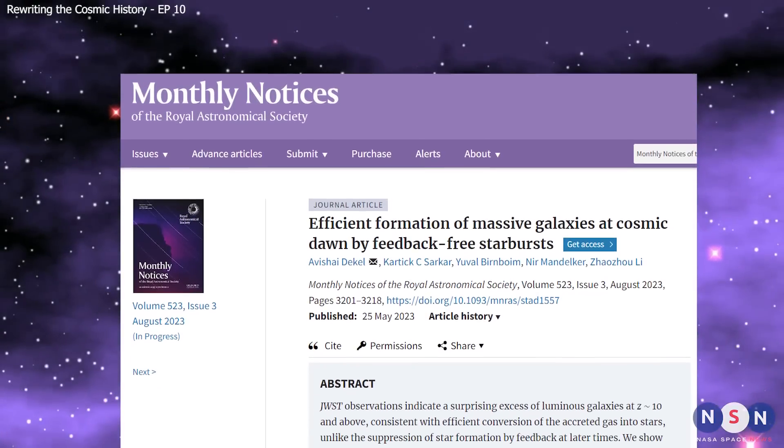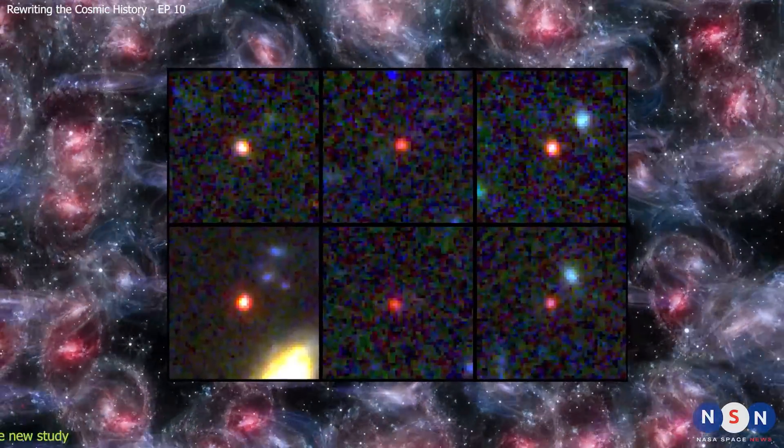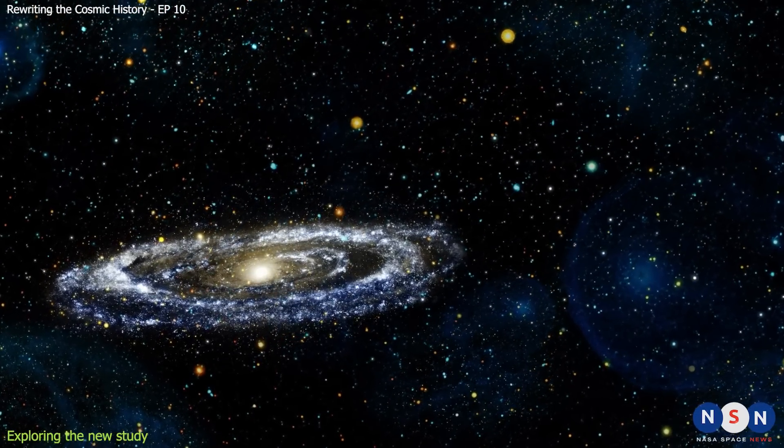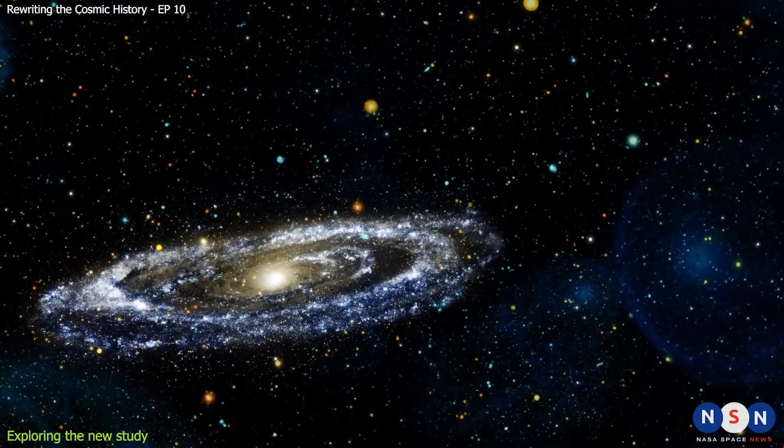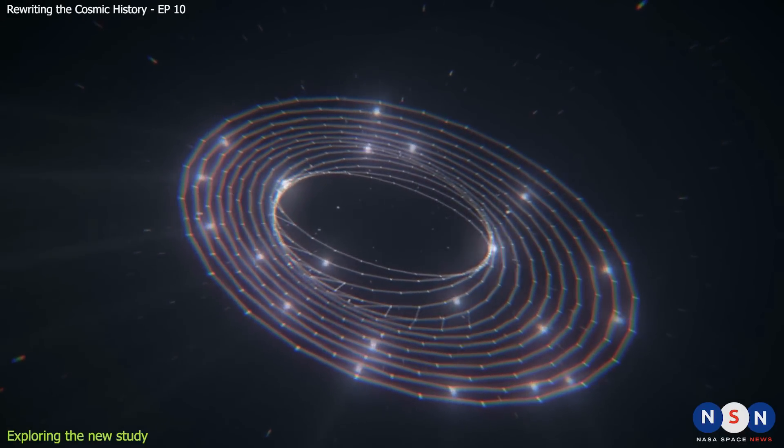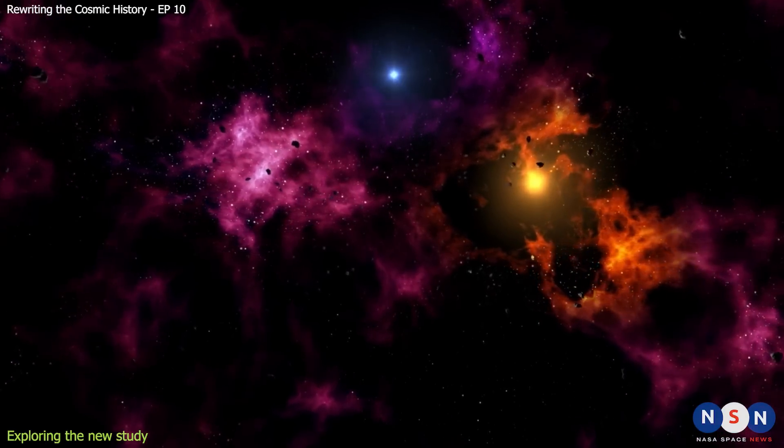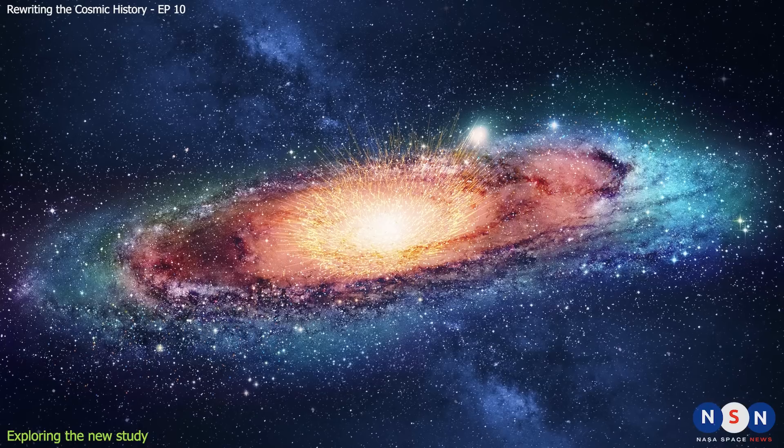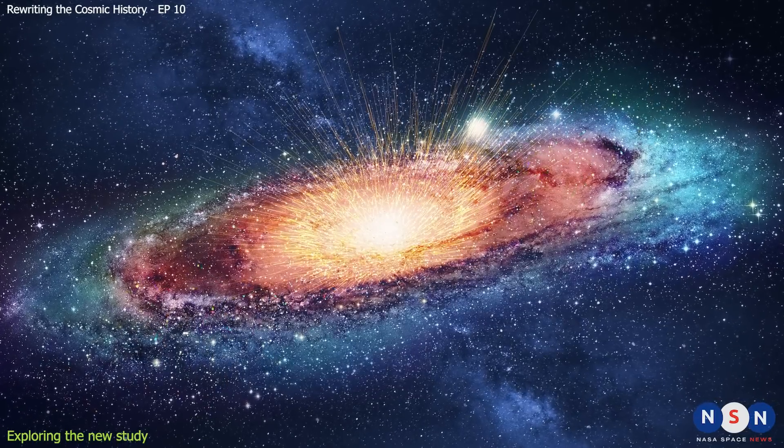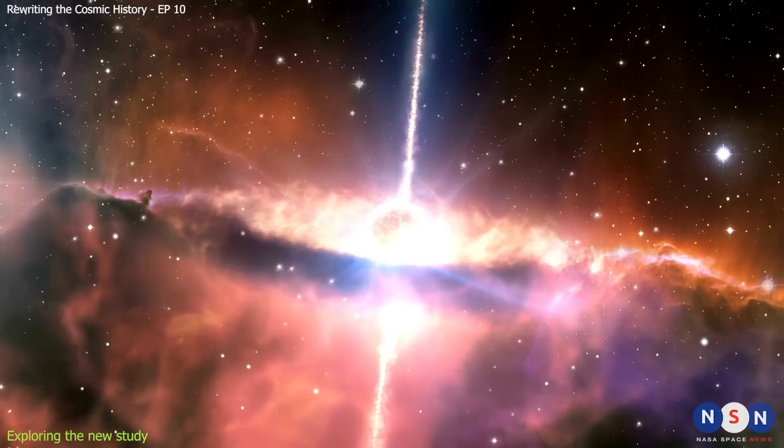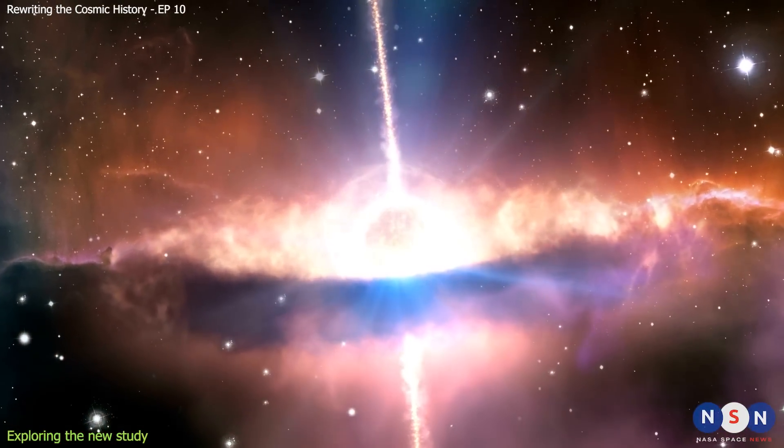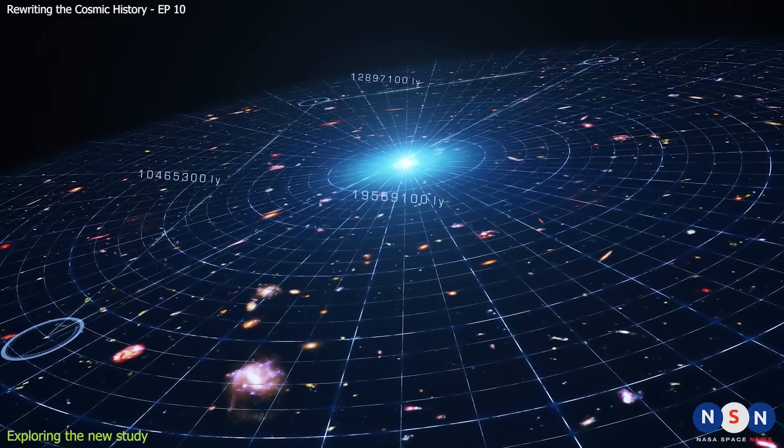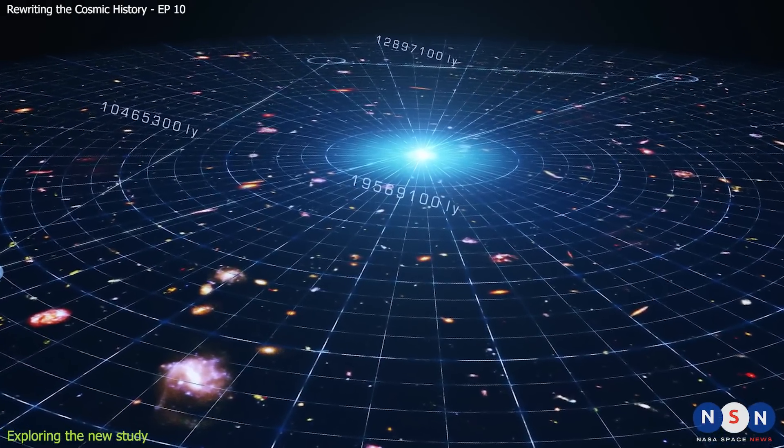In the next section we will explore this study and see how it proposes a new theoretical model that claims to solve the mystery of early massive galaxies in the universe. The study proposes a new theoretical model that solves the mystery of the formation of early massive galaxies in the universe. The model is based on the idea that the special conditions that prevailed in the primordial galaxies of high density and low abundance of heavy elements allowed the formation of stars with high efficiency without interference from other stars. The key to this idea is the concept of a starburst. A starburst is a short and intense episode of star formation that can produce millions of stars in a few million years. Starbursts can be triggered by various events, such as collisions or mergers of galaxies, or by instabilities in the gas. However, starbursts are usually self-limiting because as stars form, they also produce feedback that shuts down further star formation.